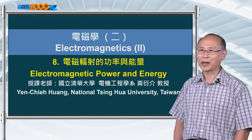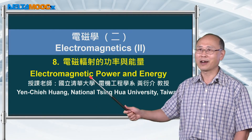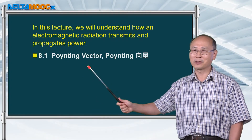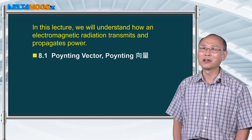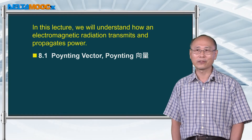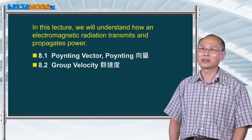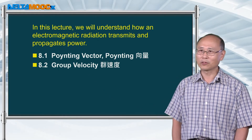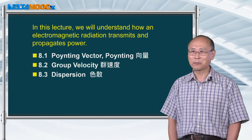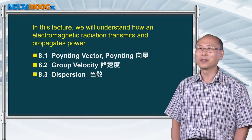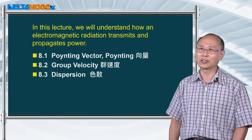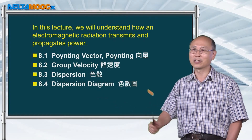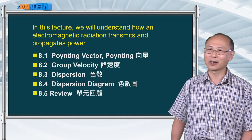Today we will be talking about electromagnetic power and energy, with a focus on the power of the electromagnetic wave. The first topic is the Poynting vector, an important physical quantity that gives the direction and intensity of electromagnetic radiation. We will also discuss group velocity for energy propagation, dispersion related to propagation at different frequencies, and how to use a dispersion diagram. Finally, we'll review a few key concepts.